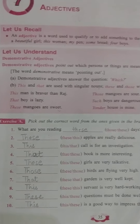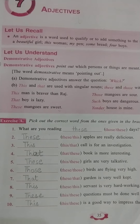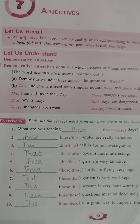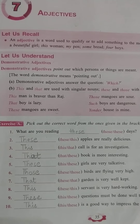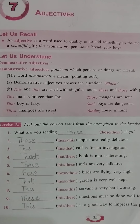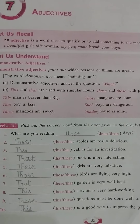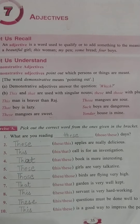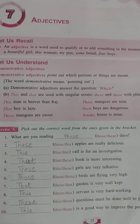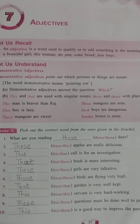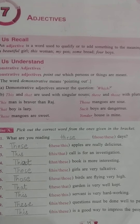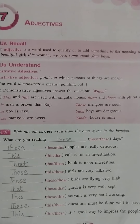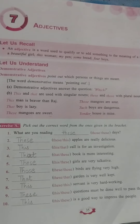Second example: 'this woman.' Woman is noun here and 'this' is the adjective — this is said to be a demonstrative adjective. Next example: 'my pen.' Here, pen is noun and 'my' is adjective. 'Some bread' — bread is noun and 'some' is adjective. 'Four boys' — boys are noun and 'four' is adjective.